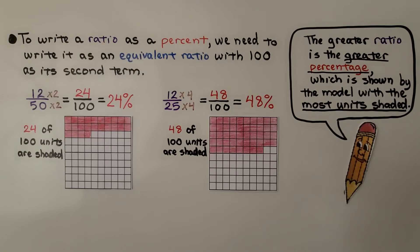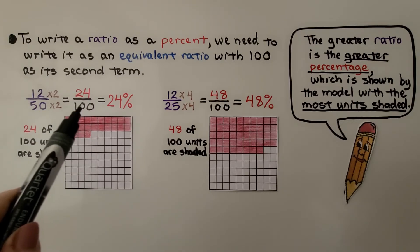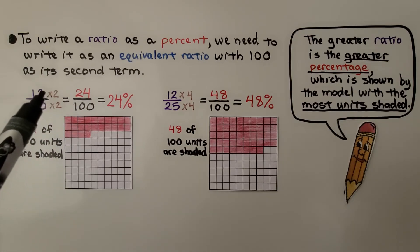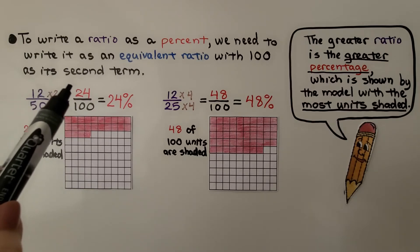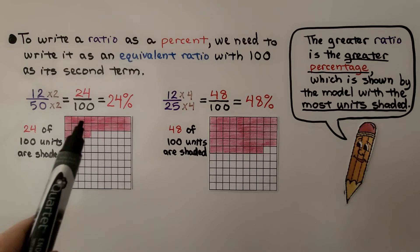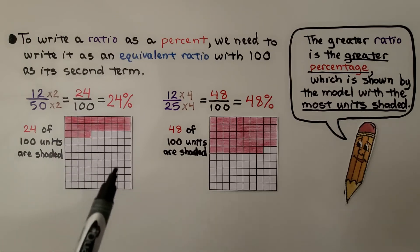To write a ratio as a percent, we need to write it as an equivalent ratio with 100 as its second term, as its denominator. If we have 12 to 50 as a ratio, we need to give it a denominator of 100 and 50 times 2 is 100. We have to multiply the numerator by the same thing. We get 24 for our numerator. That means we would shade 24 of the 100 units.